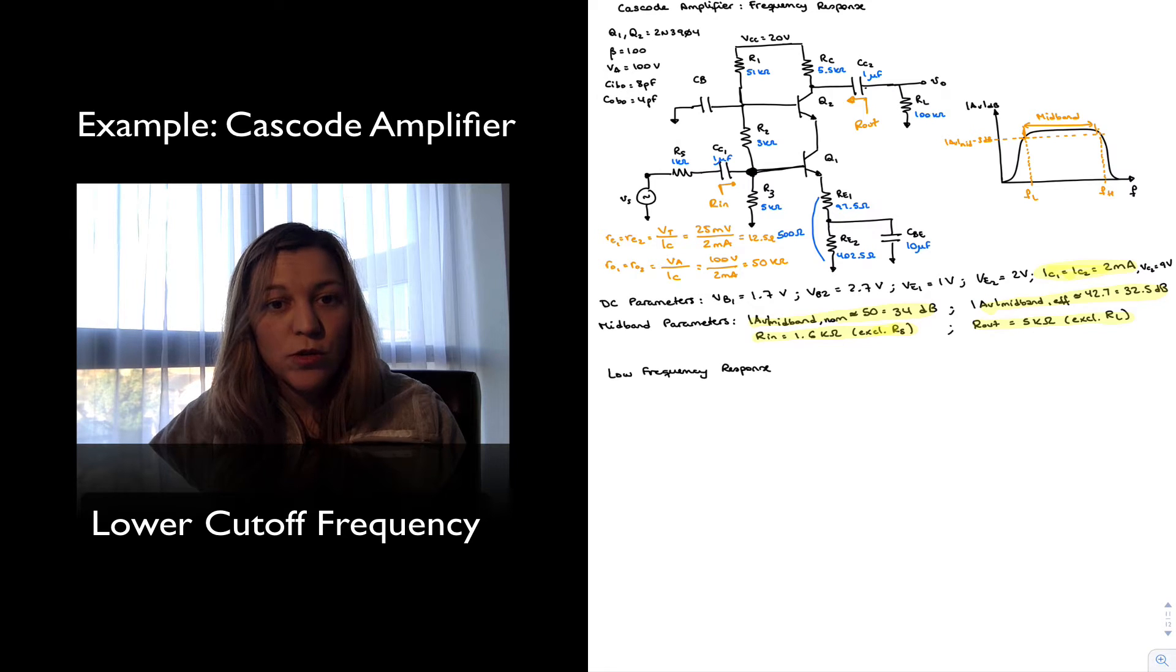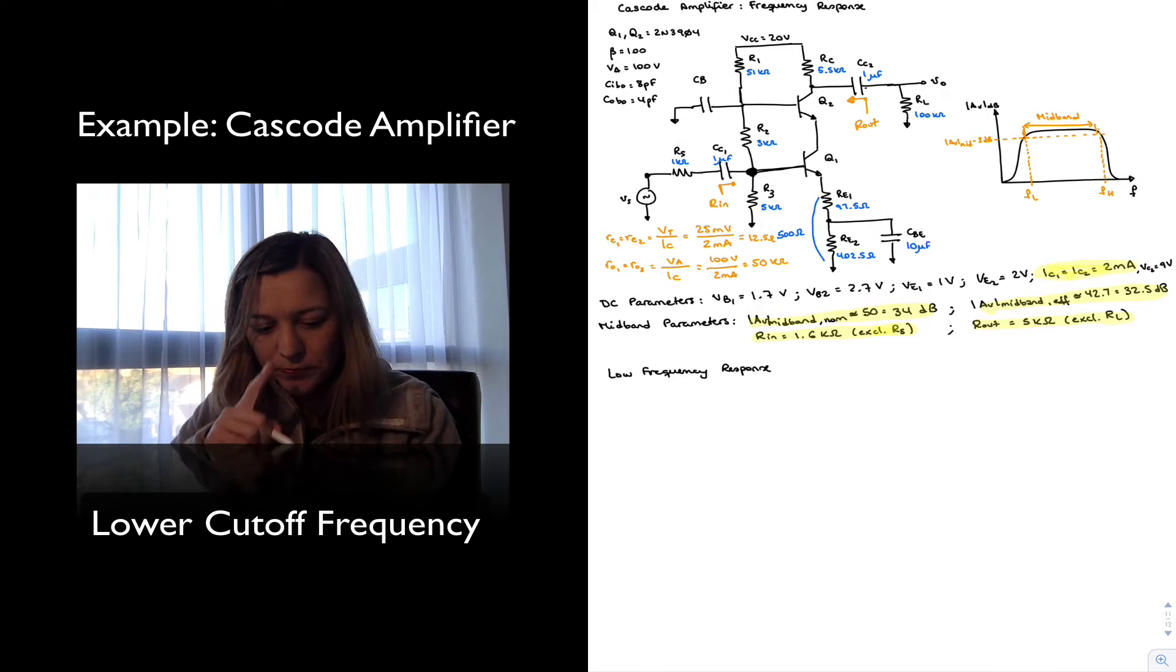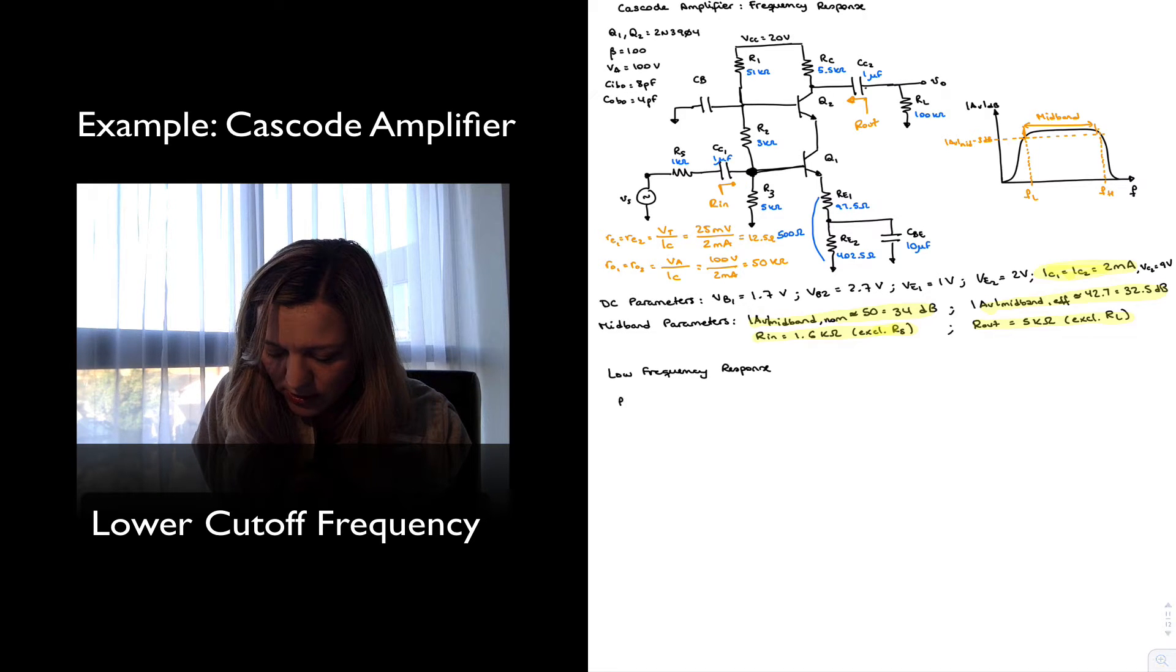And so we will have to do an extra calculation, but the methodology hasn't changed. We're still going to use the dominant pole approach. And so we're going to calculate the corner frequency due to each one of those capacitors independently, and then take the largest of those corner frequencies to be the dominant corner frequency. It's an approximation, but it works in most cases.